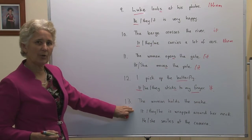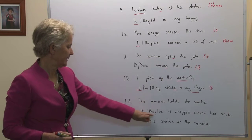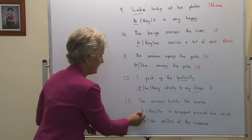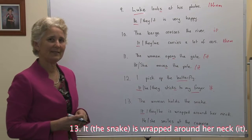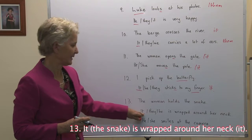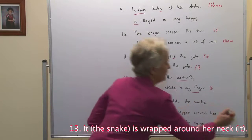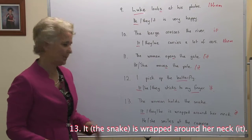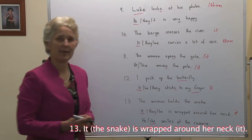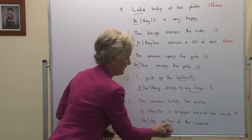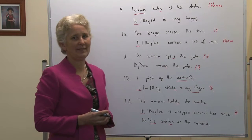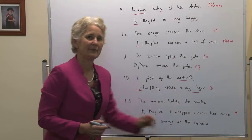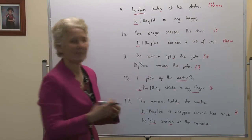Number thirteen: The woman holds the snake. The woman — it, they or he — is wrapped around her neck. We're referring to the snake is wrapped around her neck. The snake is it, third person, singular. This is the subject of the sentence — it is wrapped around her neck. Her neck would become the object — it would be it. He or she smiles at the camera. We're talking about the woman — she smiles at the camera. Notice the woman holds and the woman smiles, present tense, with an s, simple present tense. If we wanted to replace the camera, which is the object, third person, thing, it would be it.